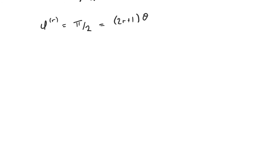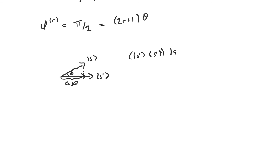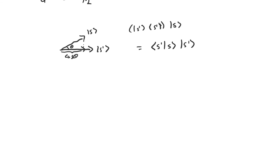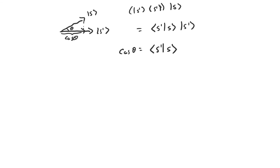The only problem is that we currently don't know what θ is. Fortunately, it's pretty easy to figure out. θ is the angle between s-prime and the uniform superposition s, so cosine(θ) is equal to the length of this vector here. This vector is actually the projection of s onto s-prime — in other words, the s-prime projection operator acting on s. So we see that its length is equal to the inner product of s-prime and s, meaning cosine(θ) equals the inner product of s-prime with s.